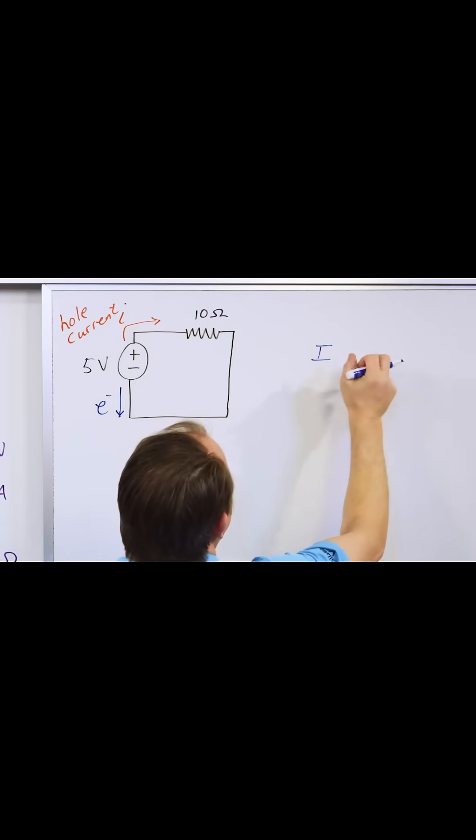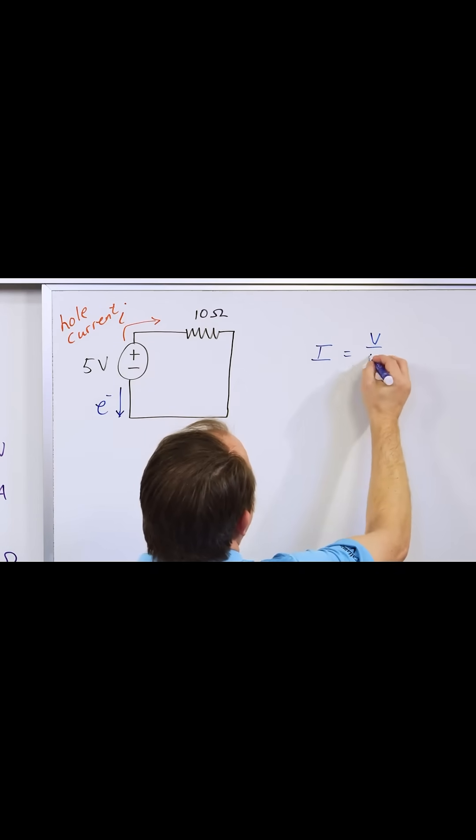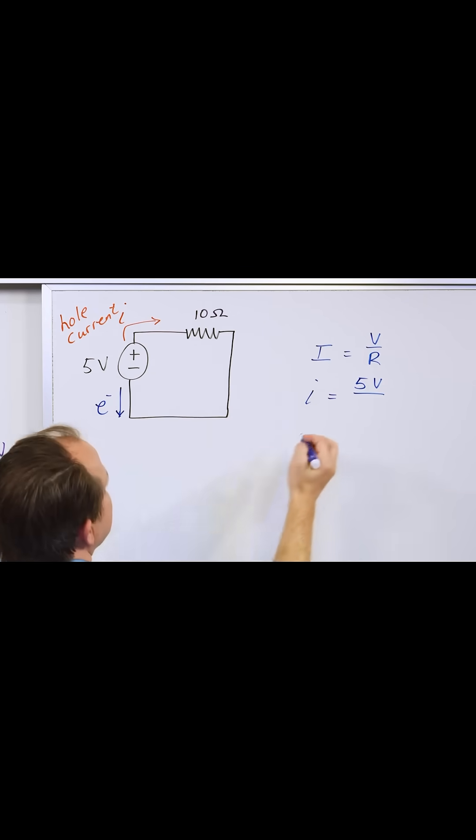The current flowing in this circuit is equal to V over R. But in this circuit, the voltage was five volts. So I'll put five volts there and the resistance was 10 ohms.